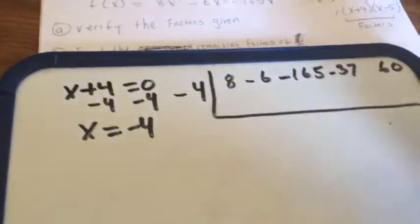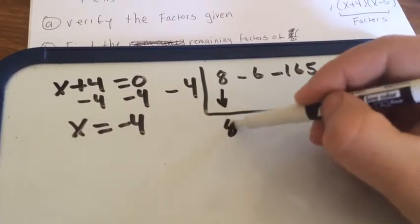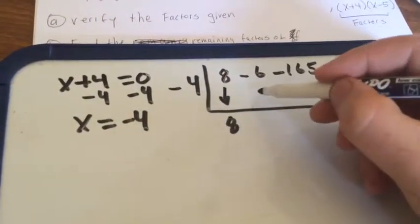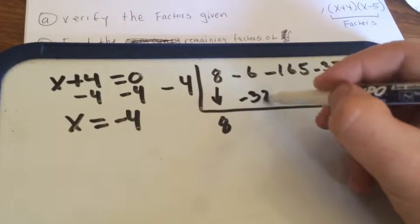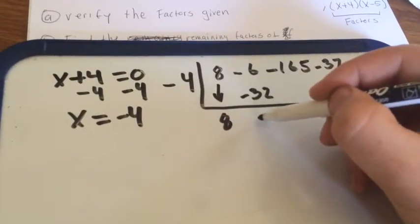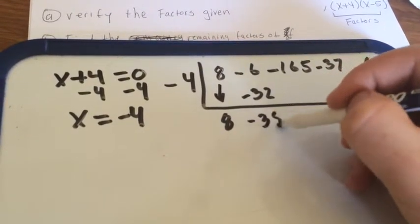Bring the first one down. We have an 8. 8 times negative 4 is negative 32. Negative 32 minus 6 is negative 38.